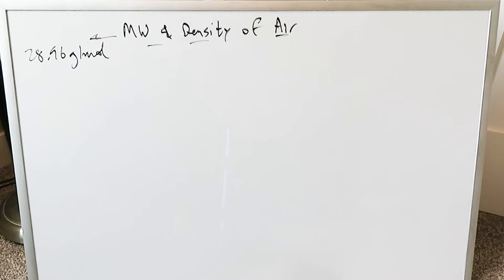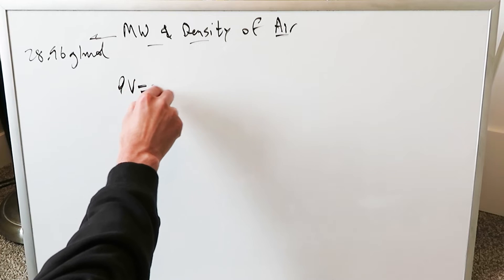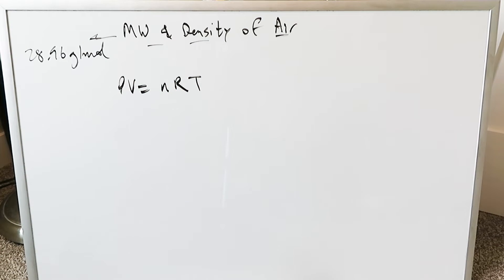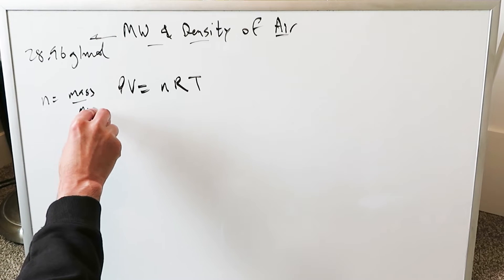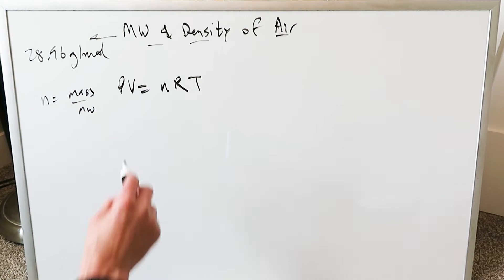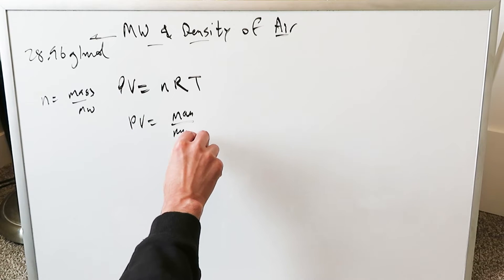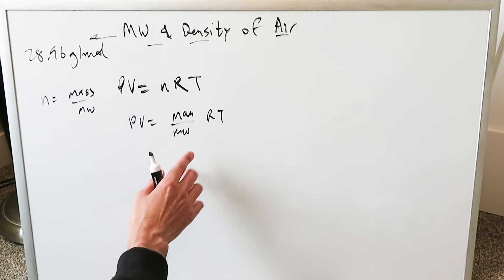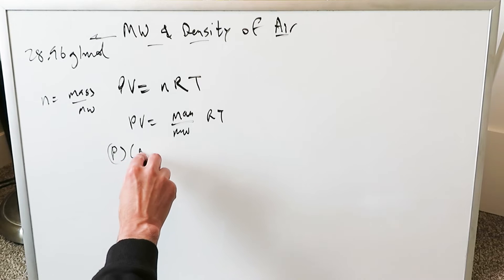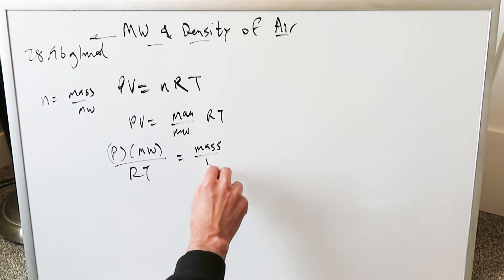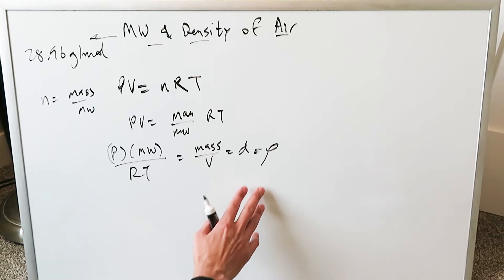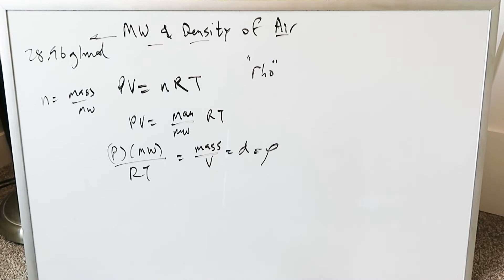To calculate the density of air, you're going to use the ideal gas law. Remember, density is equal to mass divided by volume — the amount of matter in a given space. PV equals moles times the ideal gas constant times temperature. You need to get mass in here: the number of moles equals mass divided by molecular weight, so substitute that in place of N. PV equals mass over molecular weight times RT. Rearranging, pressure times molar mass divided by RT equals mass divided by volume, which is density — represented by rho, the Greek letter that looks like a slant P.